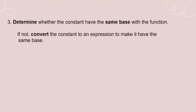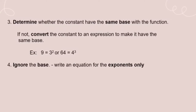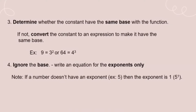Next, determine whether the constant has the same base as the function. If not, convert the constant to an expression with the same base — for example, 9 = 3² or 64 = 4³. After that, ignore the base and write an equation for the exponents only. Note that if a number doesn't have an exponent, for example 5, then the exponent is 1. Finally, solve and simplify.